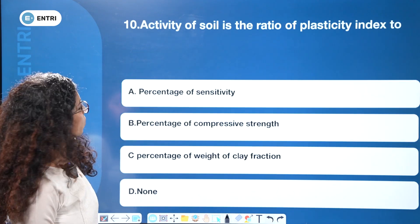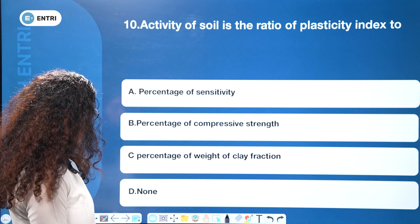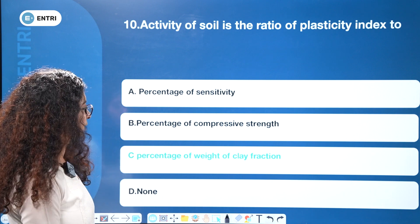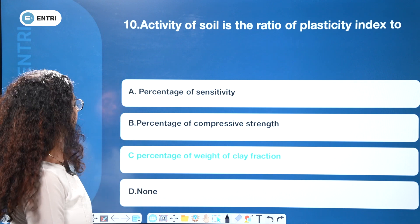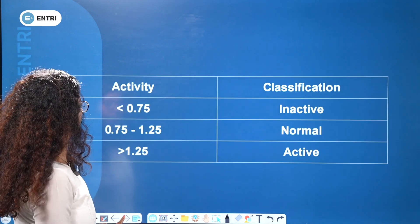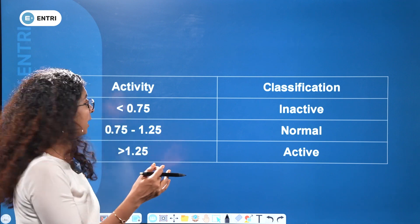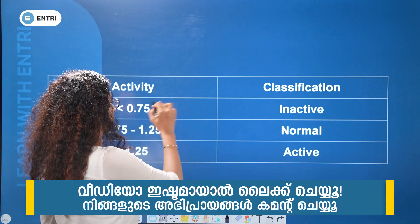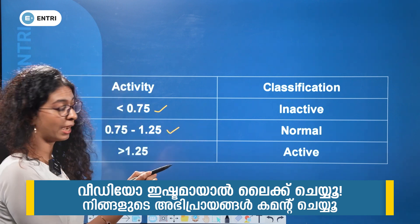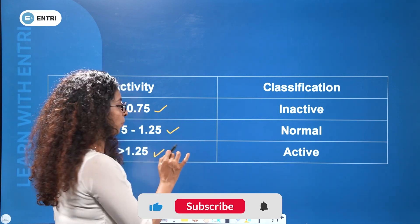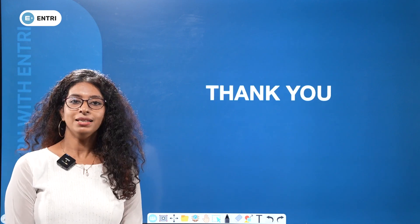Activity of soil is the ratio of plasticity index to the percentage weight of clay fraction. In classification: inactive soil has activity less than 0.75; normally active soil is 0.75 to 1.25; active soil has activity greater than 1.25.